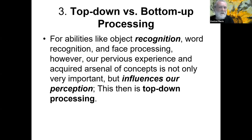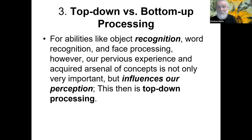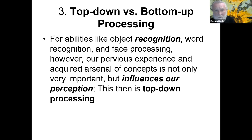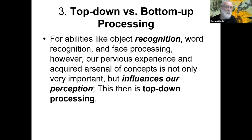For abilities like object recognition, word recognition, and face processing, our previous experience and acquired arsenal of concepts is very important and influences perception — these would be top-down. Bottom-up is the immediate, non-cognitive kind of response to visual data that happens early and is sometimes cognitively impenetrable. Top-down happens later in the processing of visual experience, affected by expectations, prior learning, and culturally acquired frameworks. These are two different ways we end up interpreting and structuring our experience.